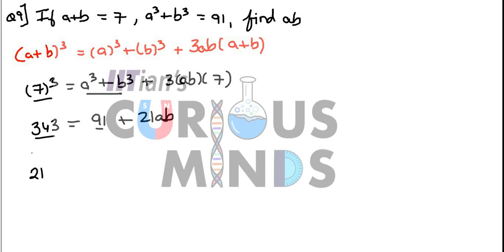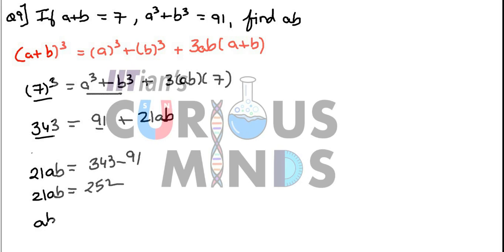Therefore, 21ab is equal to 252. Therefore, ab is equal to 252 upon 21, and therefore ab is equal to 12, which is the final answer.